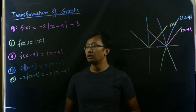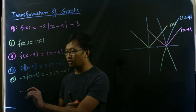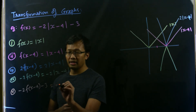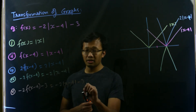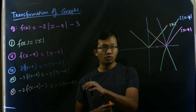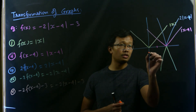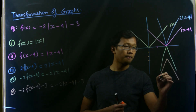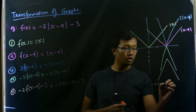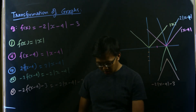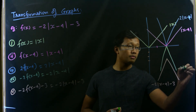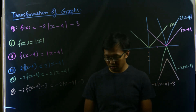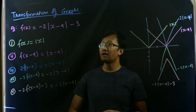Finally, we include minus 3 in our formula: negative 2 times f(x minus 4) minus 3 becomes negative 2 times the absolute value of x minus 4, minus 3. The minus 3 means there is a vertical shift, so we go 3 units down. Our curve shifts down accordingly, and this orange-colored curve is the final graph of the function.